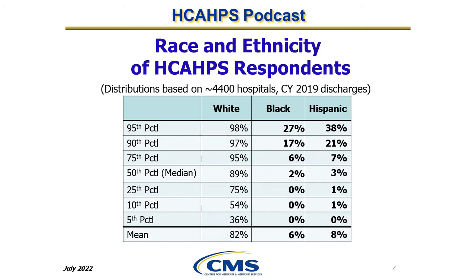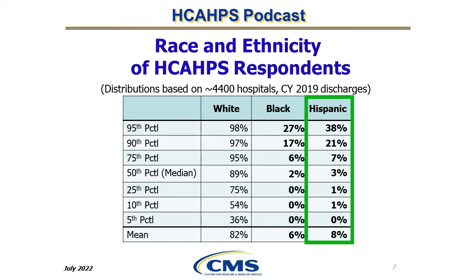The distribution of the proportion of white patients among the 4,400 hospitals ranges from 36% at the 5th percentile up to 98% at the 95th percentile. The distribution of Hispanic patients ranges from 0% at the 5th percentile up to 38% at the 95th percentile. A hospital could calculate its own proportion of Hispanic respondents and compare that to the percentiles in the Hispanic column of this table. For example, if a hospital calculates their Hispanic patient proportion as 21%, they are in the top 10% of all hospitals with respect to the percentage of respondents who are Hispanic.